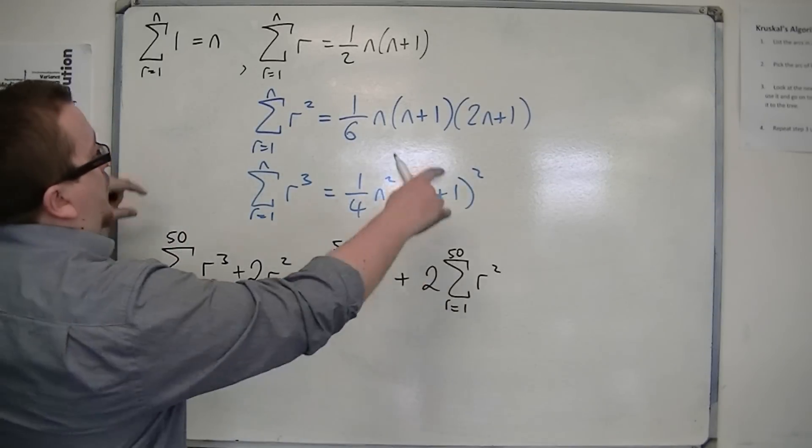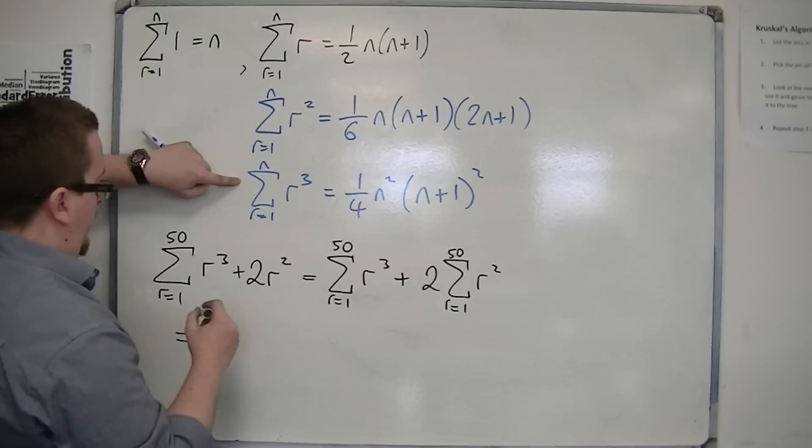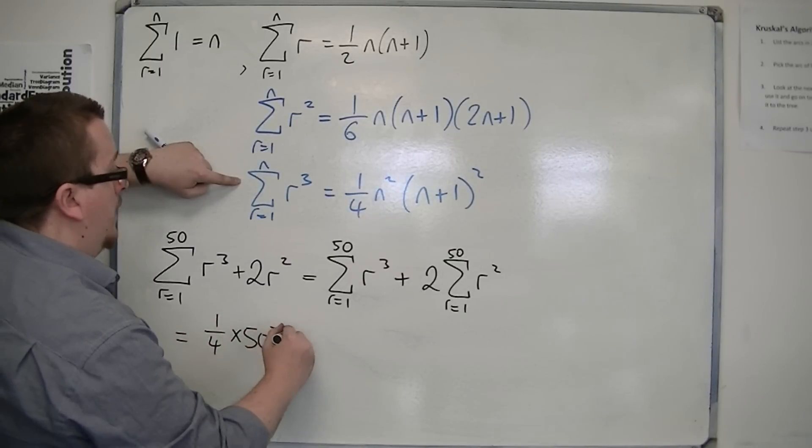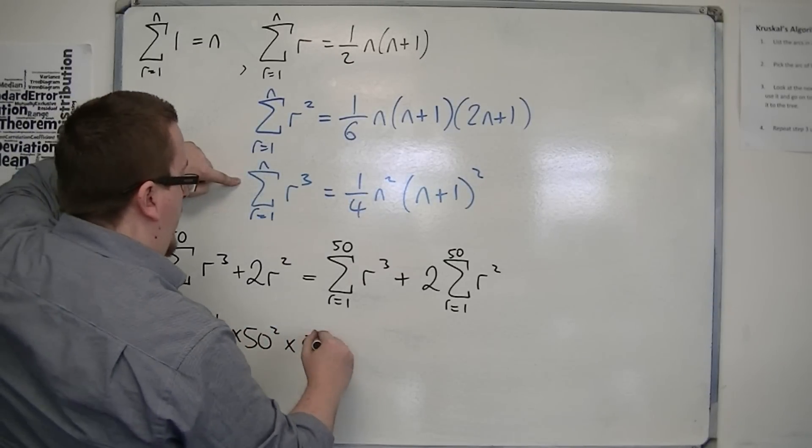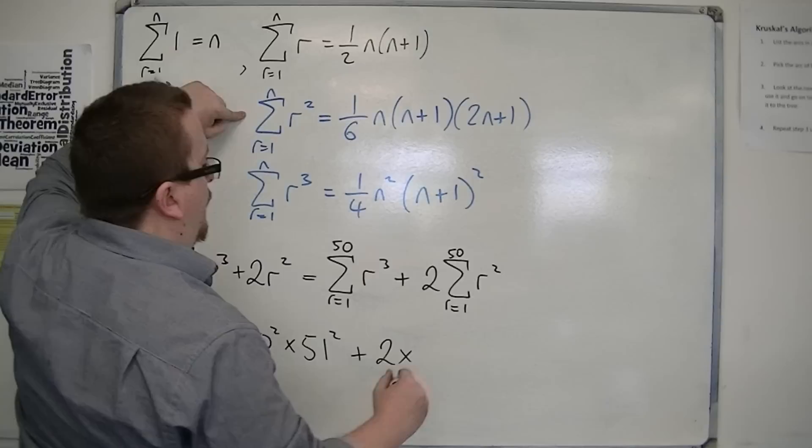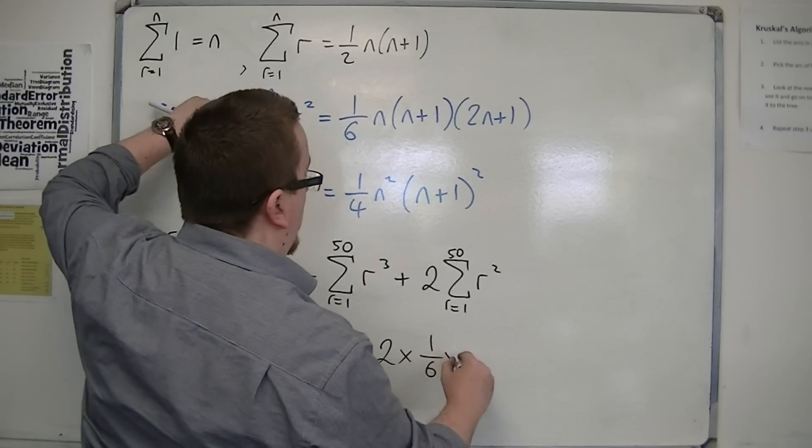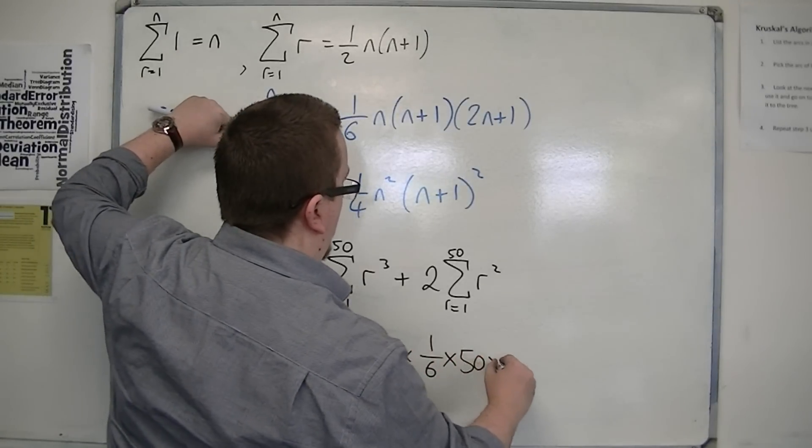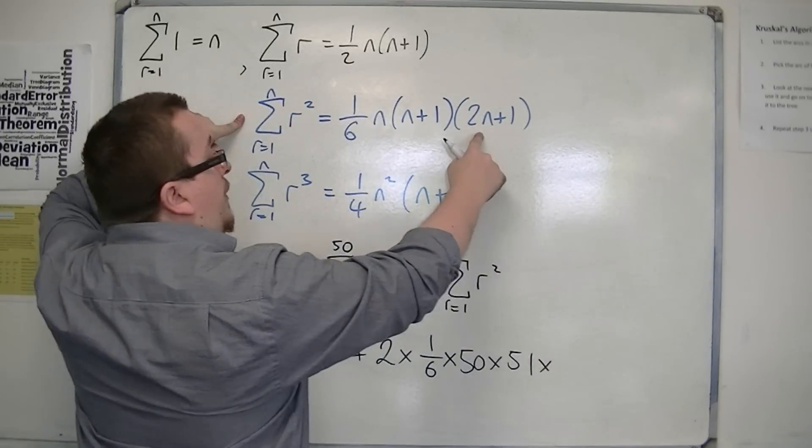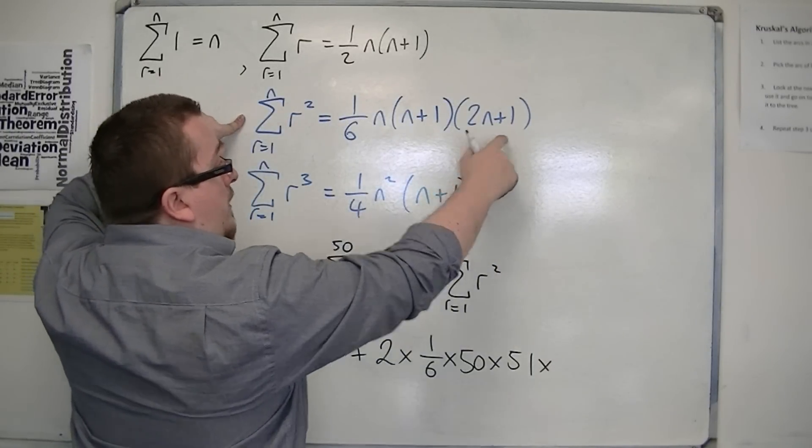So substituting in 50 into this, we have 1 quarter times 50 squared times 51 squared plus 2 lots of 1 sixth times 50 times 51 times 2 times 50 plus 1, so 101.